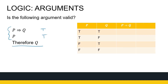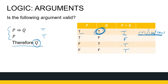If P implies Q is true and P is true, can I conclude that Q has to be true? Setting up the truth table with P and Q: P implies Q is true, false, true, true. We want to find our critical rows — where are both P and P implies Q true? There's only one critical row. Looking at the conclusion Q in that critical row: Q is true where both hypotheses are true. So my argument is valid. This means: if I know an implication is true and I know the first part of that implication is also true, then the conclusion of the implication has to be true. And that is it for arguments.